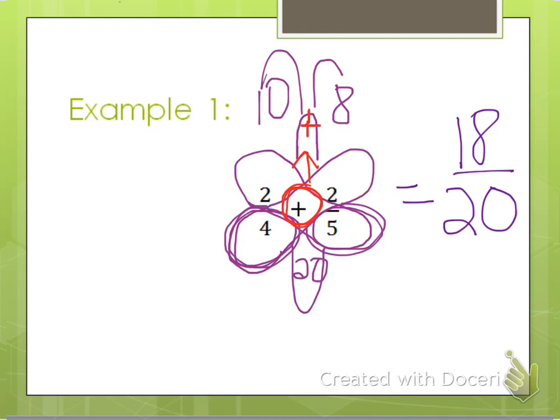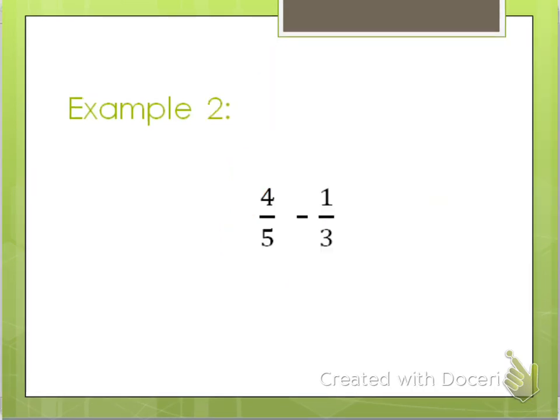And the butterfly method works just as good on subtraction problems as it does on addition problems. So for a second example here, I have four-fifths minus one-third.